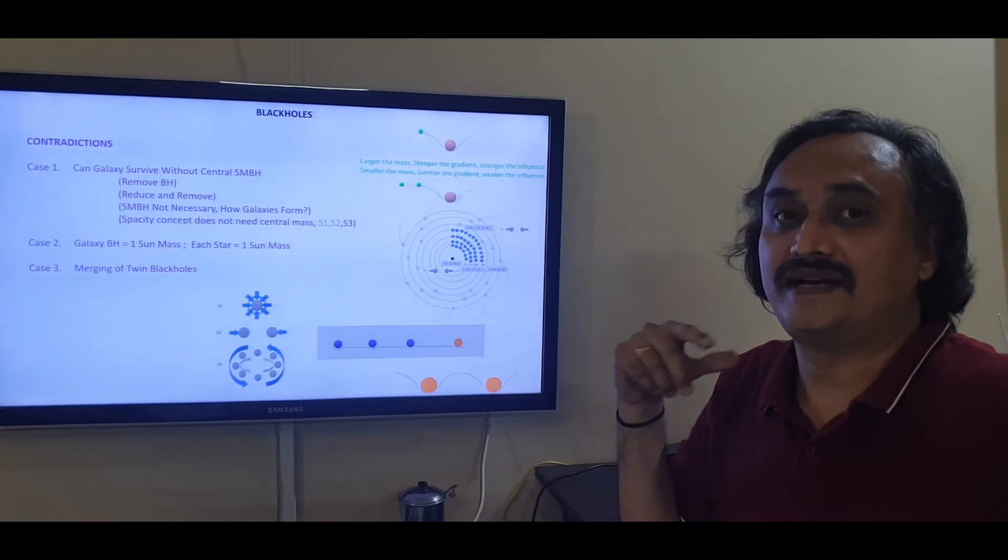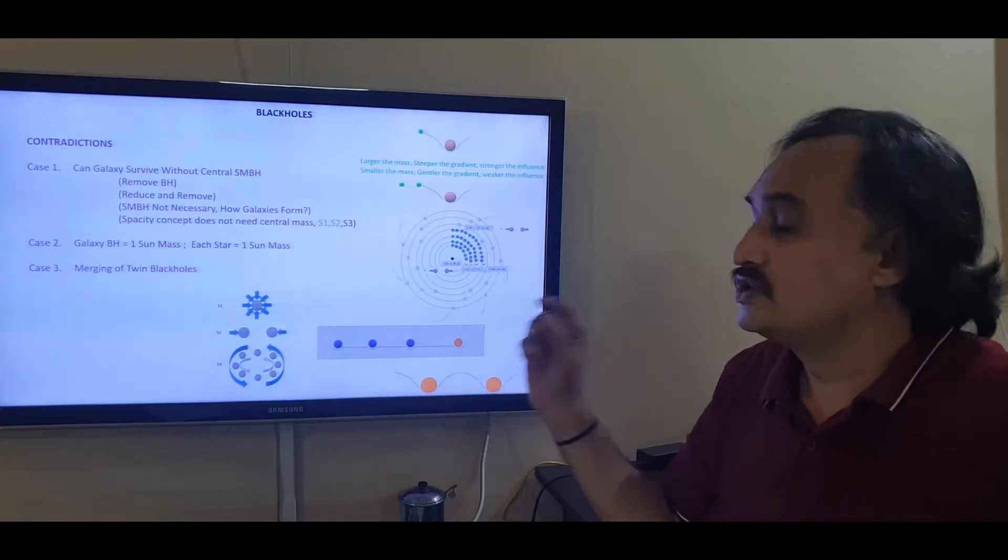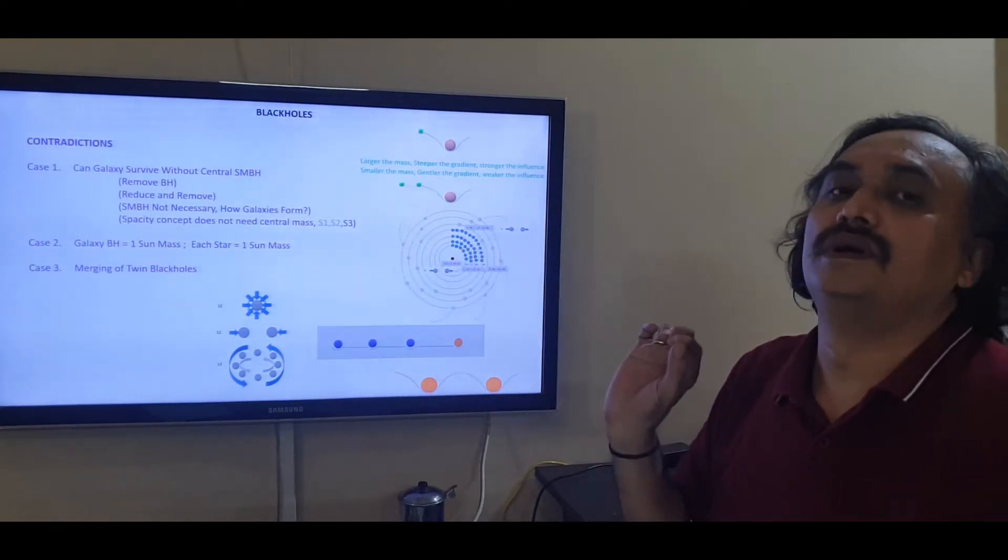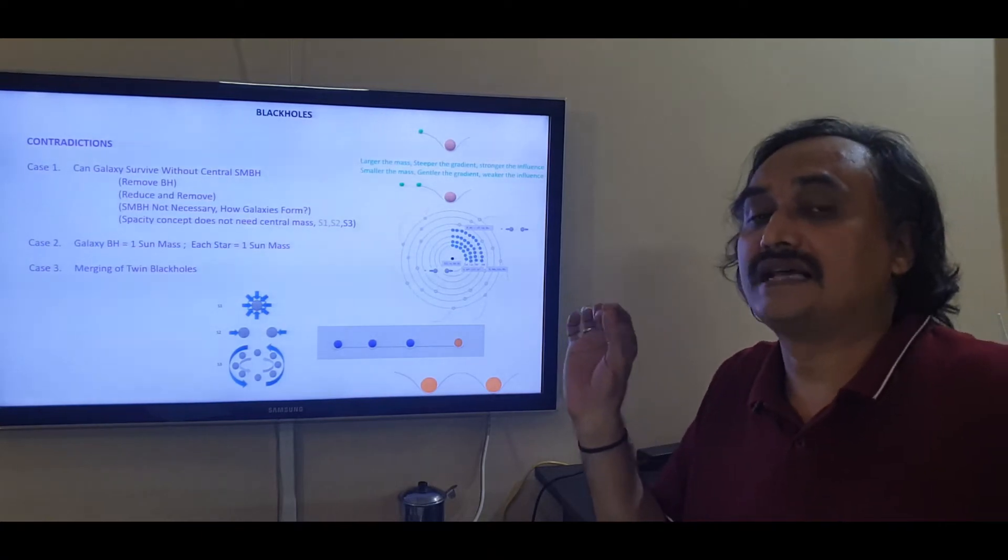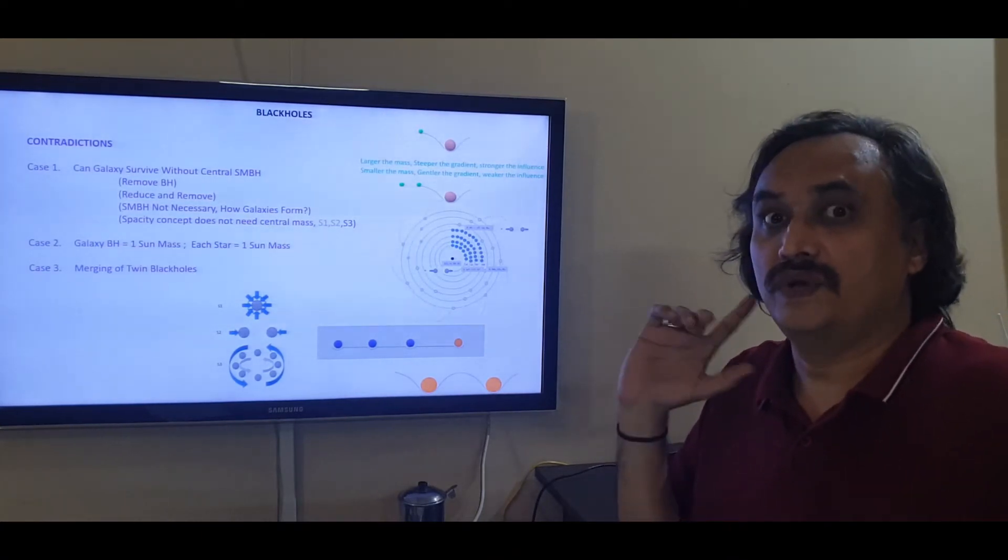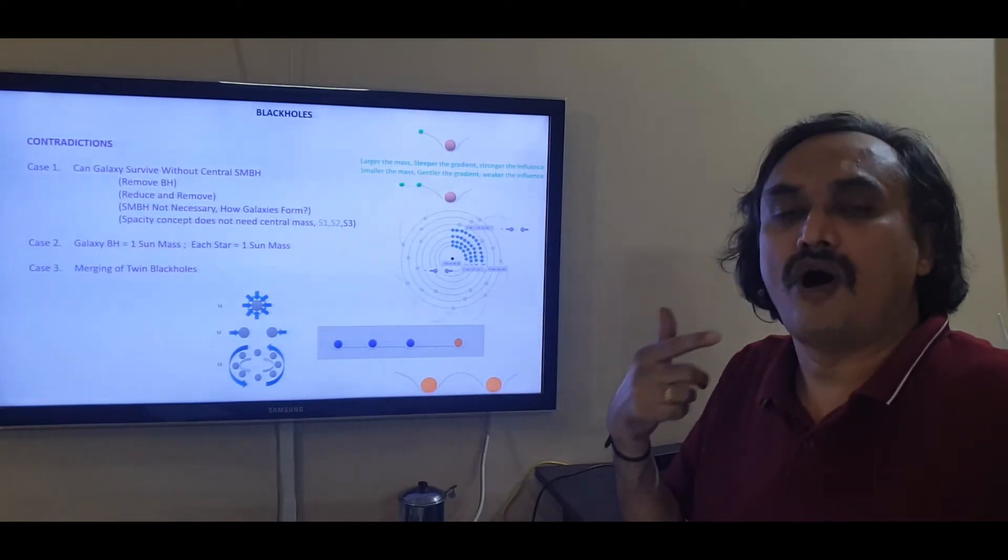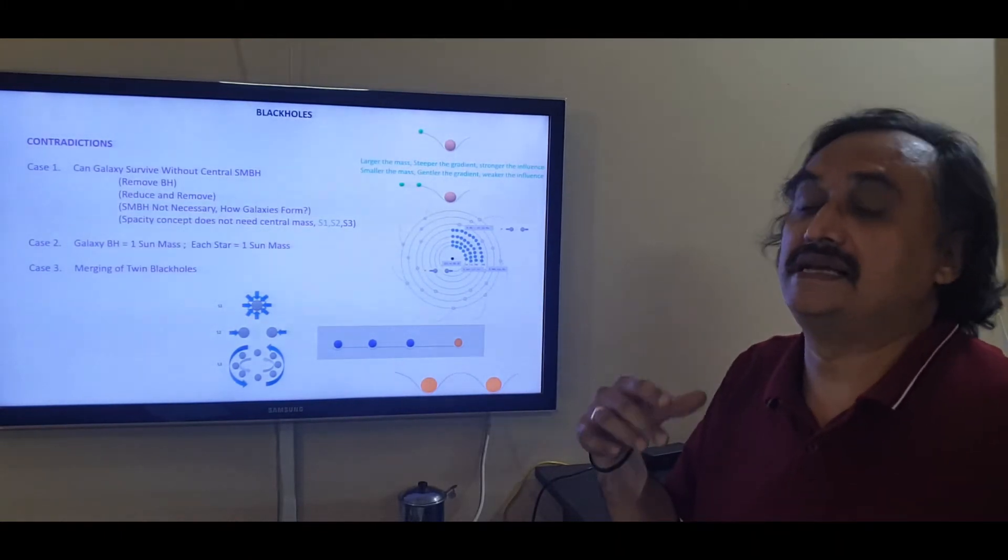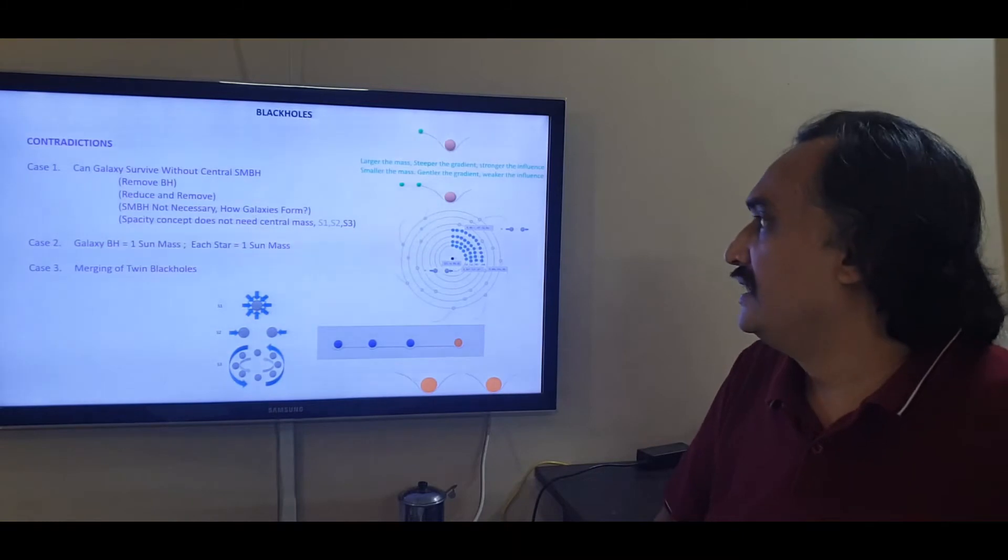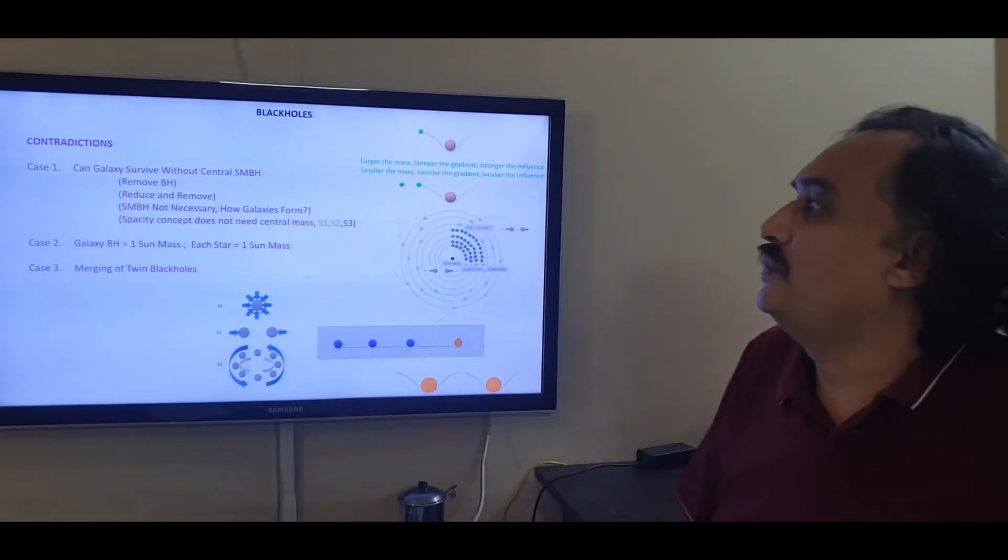The galaxy is not getting disintegrated. So even when you remove that one last sun mass weight, even then the galaxy would keep on following the orbit that it was. It is just that it is bigger in size. And this is the contradiction that we talk about.